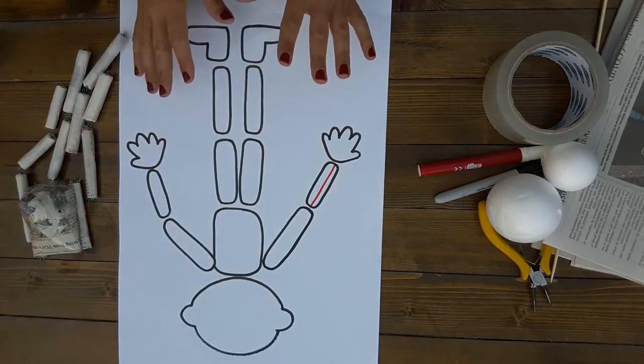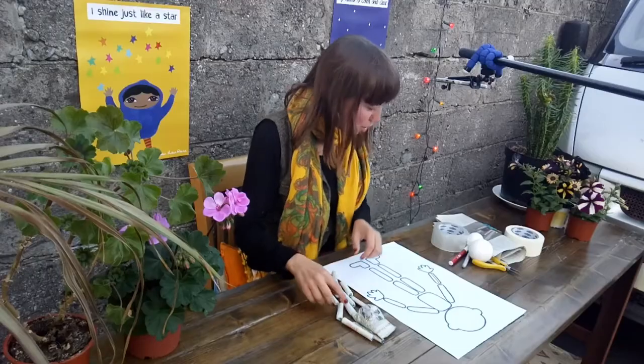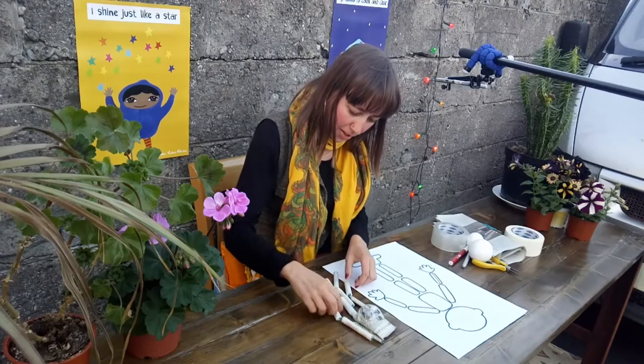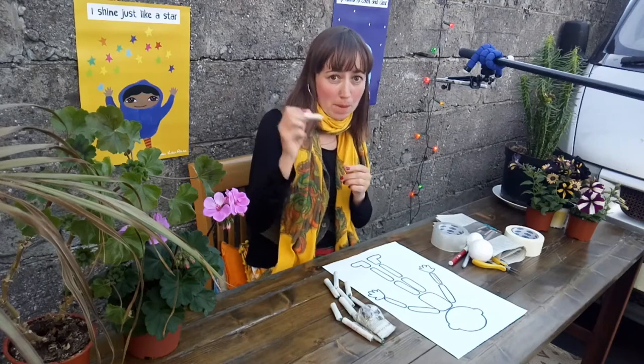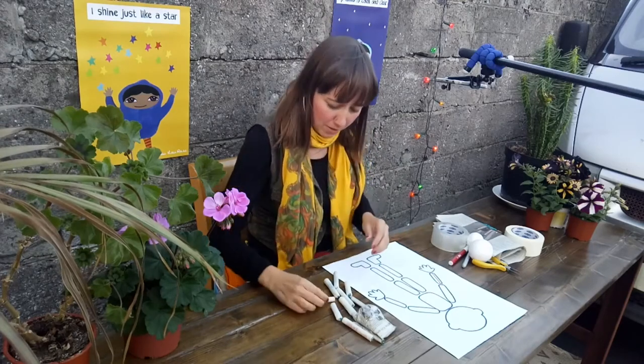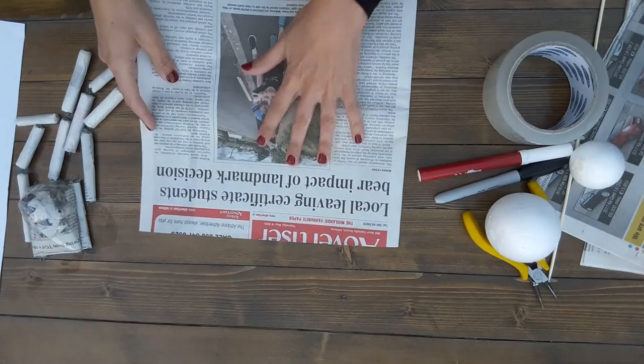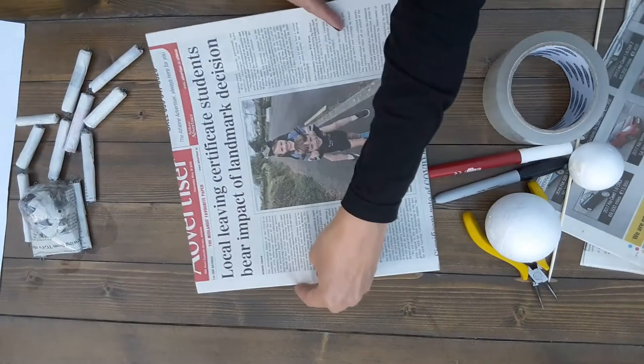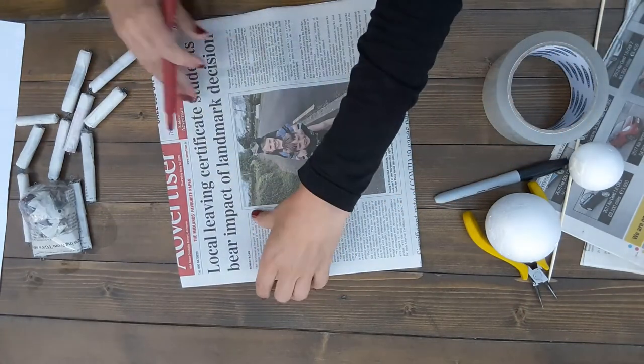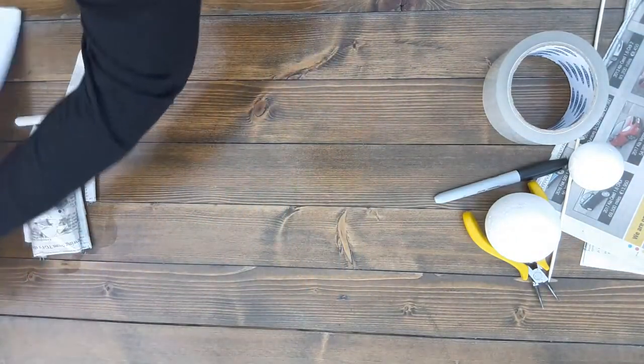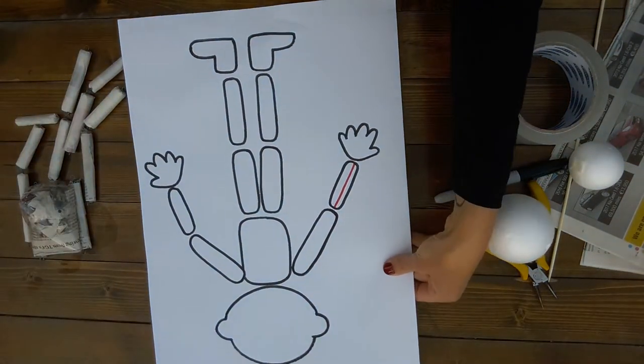The way each limb is made is really simple. We just roll up a wire inside the newspaper, so I'll just show you how to do that. We just get a piece of newspaper and marker and just measure the size of the limb that you'd like to begin with.